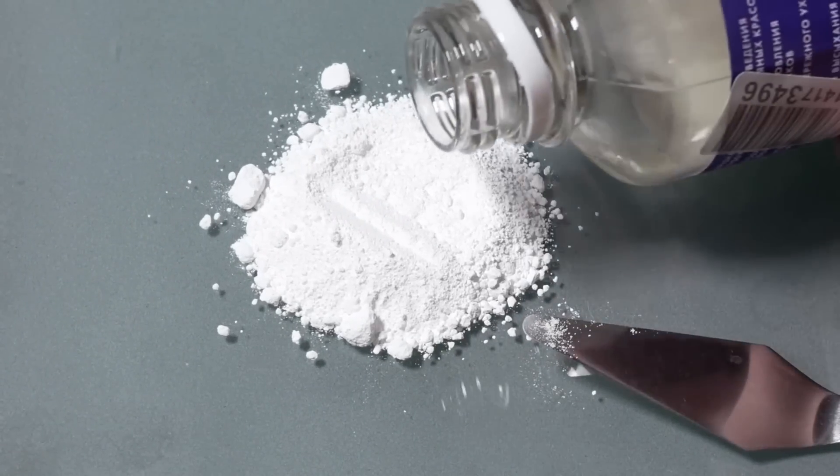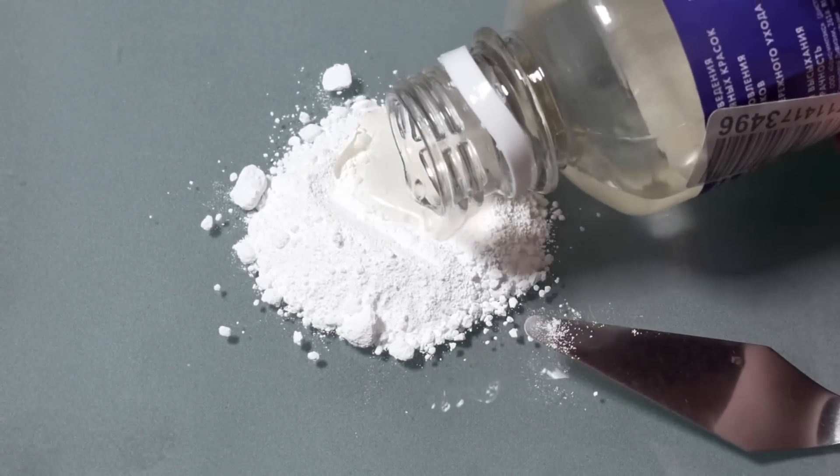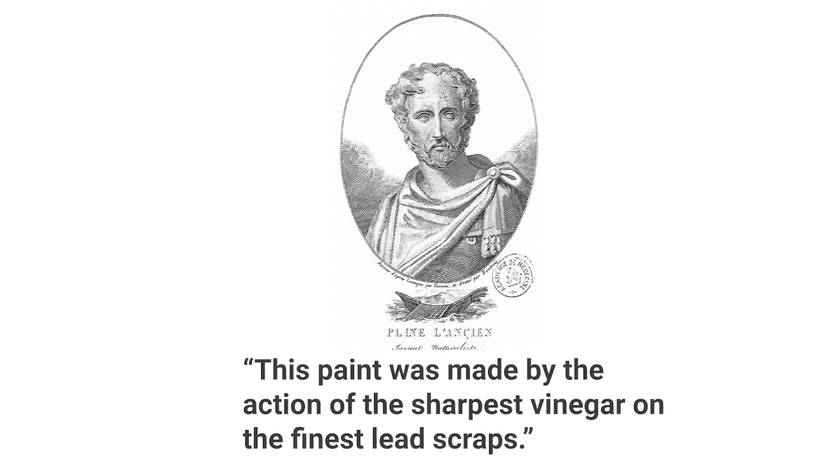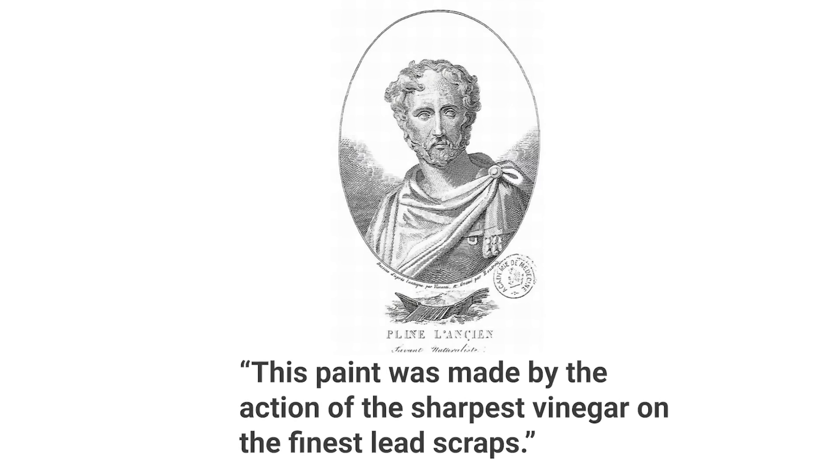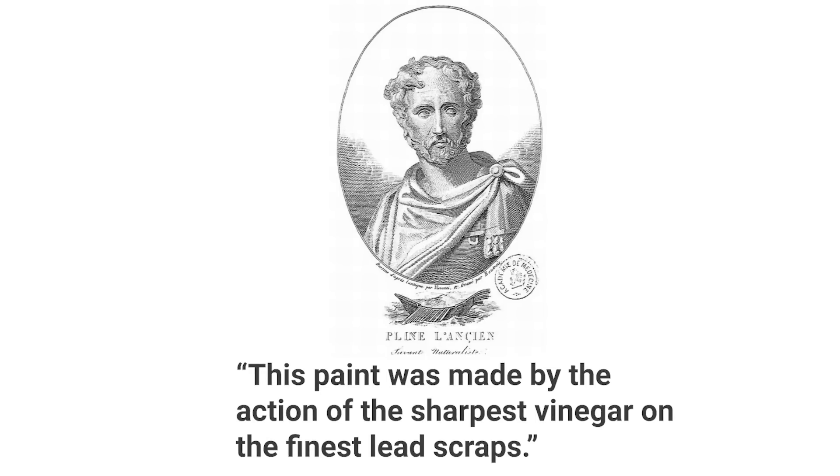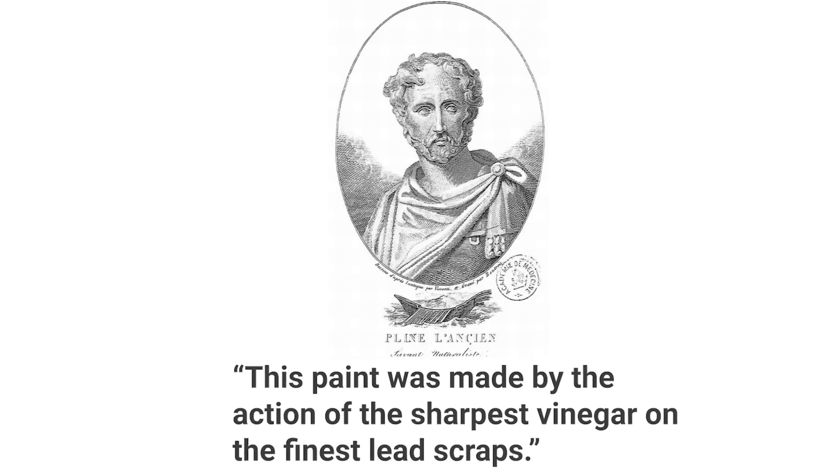That's why lead white was mainly produced artificially. They started making them in ancient times. The Roman historian Pliny wrote in the first century AD that this paint was made by the action of the most potent vinegar on the finest lead scraps.